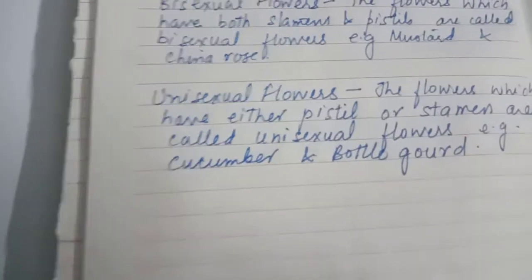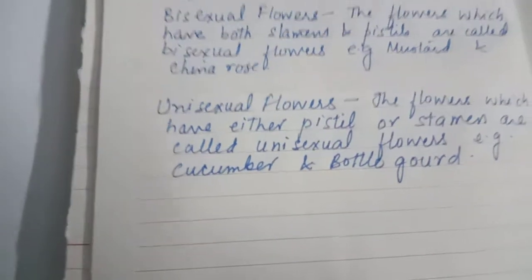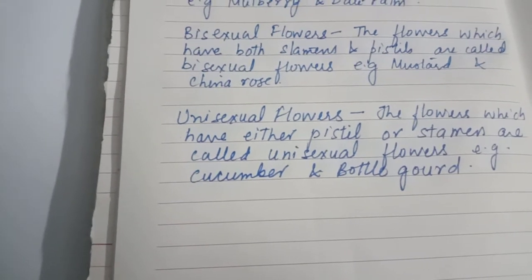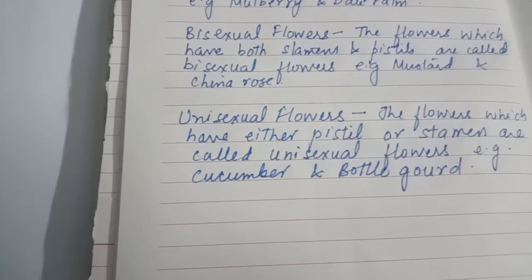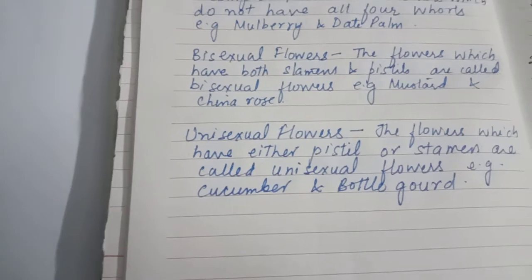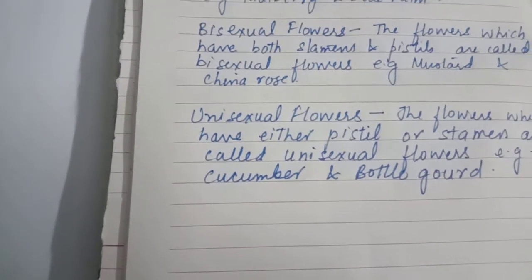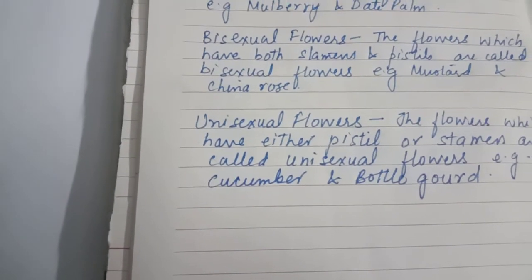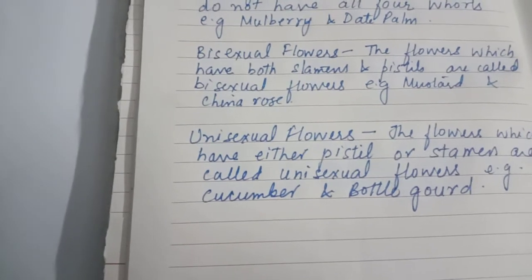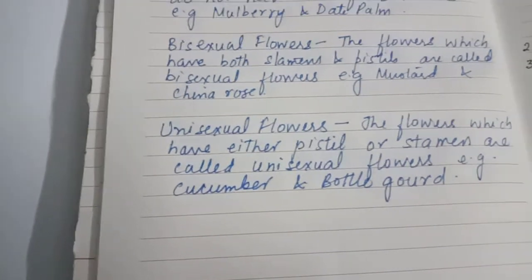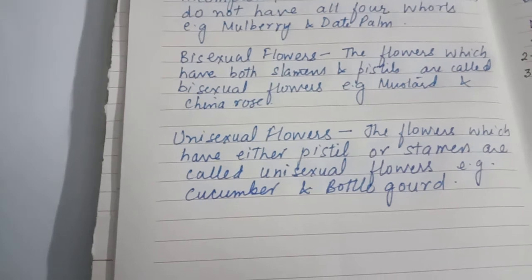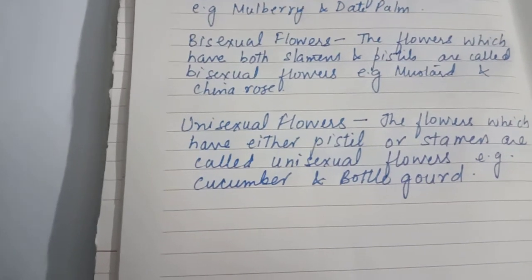Unisexual flowers — 'uni' means one — are flowers which have either a pistil or a stamen, but not both. Examples are cucumber and bottle gourd. Videos on bottle gourd and cucumber have also been uploaded where you can see how these unisexual flowers grow.